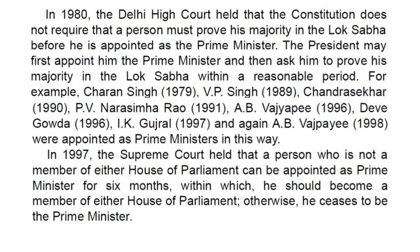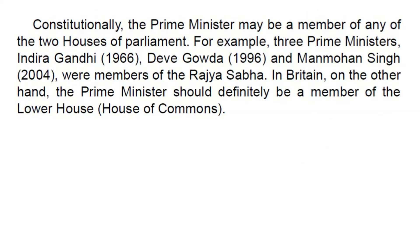In 1997, the Supreme Court held that a person who is not a member of either House of Parliament can be appointed as Prime Minister for six months, within which he should become a member of either House of Parliament, otherwise he ceases to be the Prime Minister. Constitutionally, the Prime Minister may be a member of any of the two Houses of Parliament.